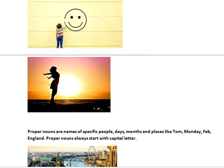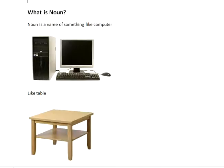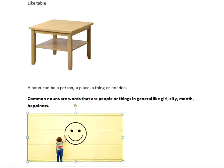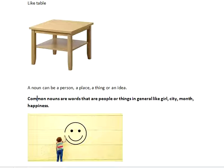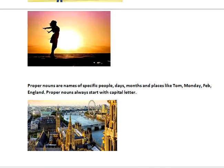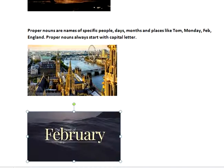So what is the difference between a common noun and a proper noun? A common noun is used when we represent people or things in general — common nouns are not specific, they are general, like girl, city, month. Proper nouns are the names of specific people, days, months, and places. Please remember that proper nouns always start with capital letters — that is a very basic identity of proper nouns.